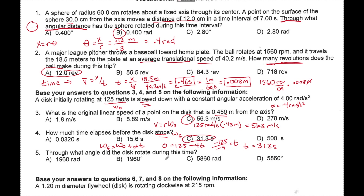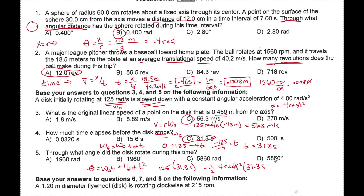Through what angle did the disk rotate during this time? The angle traveled equals omega naught t plus one-half alpha t squared. That's 125 times 31.3 seconds, minus one-half times 4 rads per second squared times 31.3 seconds squared. This must be in radians, and the math comes to approximately 1,954 radians.